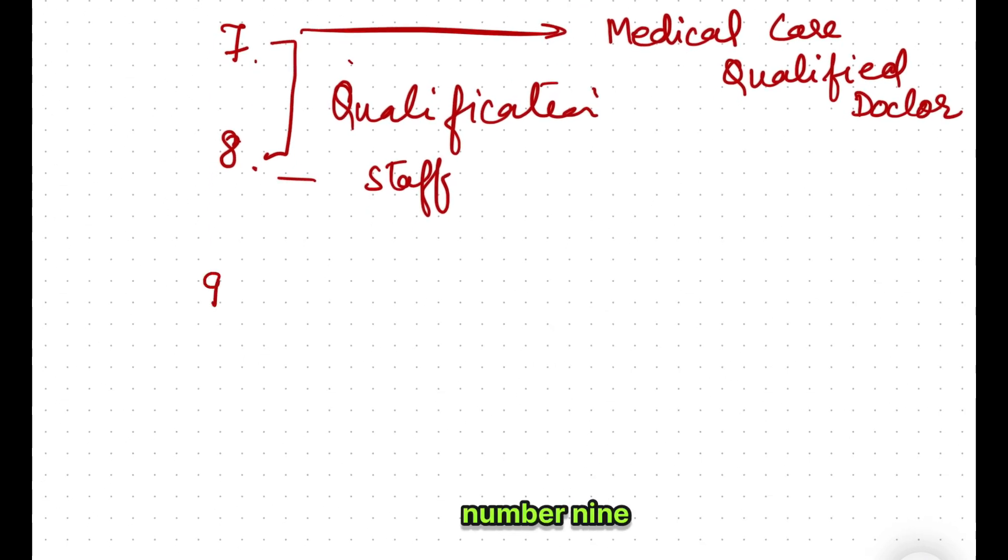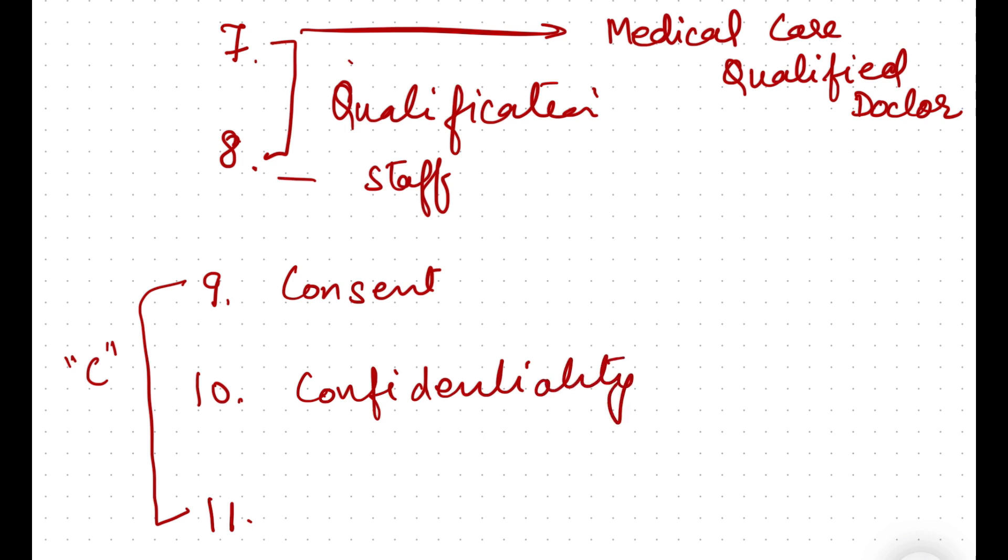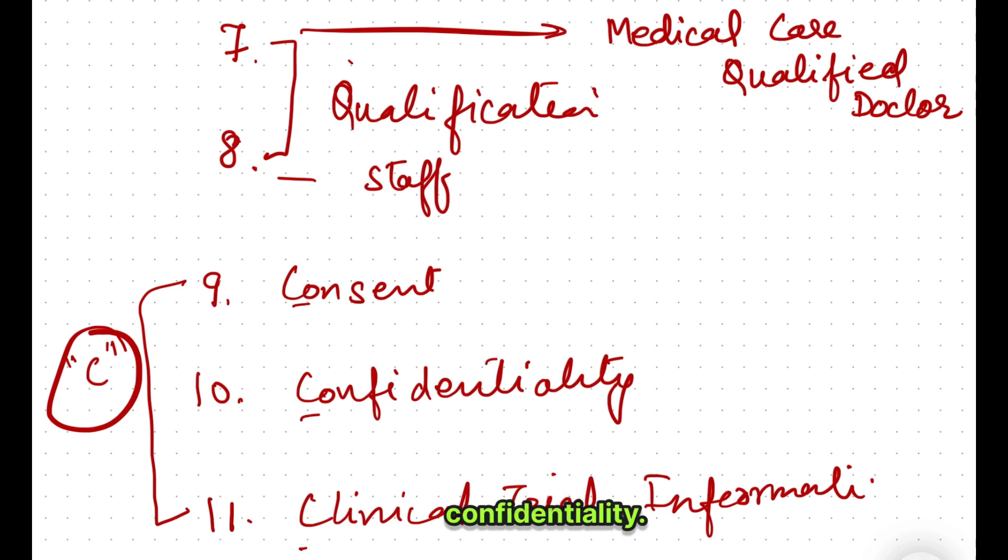Now principles 9, 10, and 11 - these three you can remember by the alphabet C. The ninth principle is consent - freely given informed consent. The 10th principle is confidentiality. And the 11th principle is clinical trial information. See the beauty - all these three are starting with the alphabet C: consent, confidentiality, clinical trial information should be recorded, handled, and stored in a correct way.